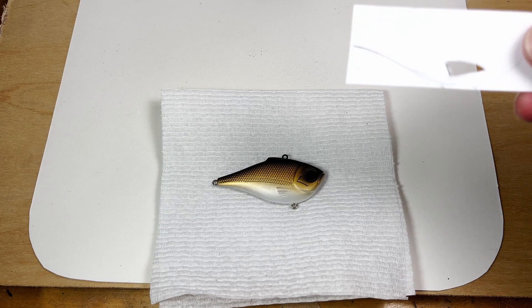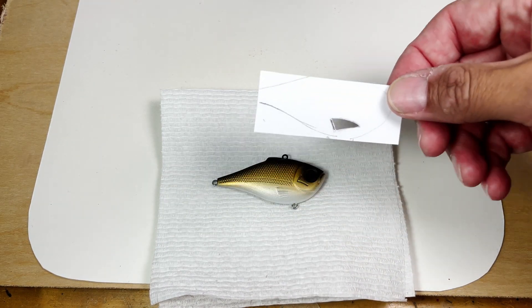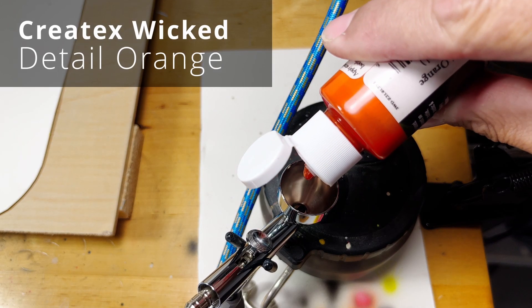I cut a mask out of cardstock for the pectoral fin. I'll use detail orange to spray the fin.